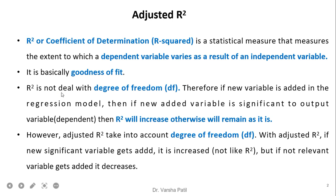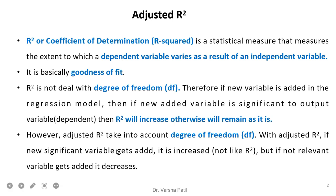With r-square, addition of a new variable: if it is significant, it increases; if it is not, it will remain as it is. But with adjusted r-square, if we add a new variable that is insignificant, it decreases; and if we add a significant variable, it increases but not to the same extent as r-square.